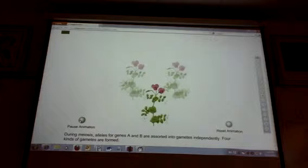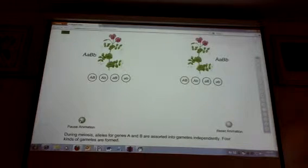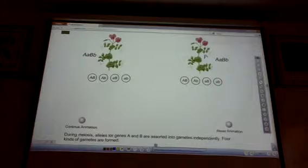During meiosis, alleles for genes A and B are assorted into gametes independently. All right, now it gets interesting. All right, here are the F1 plants. Remember, these were produced when we did this cross.